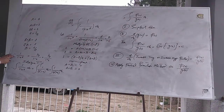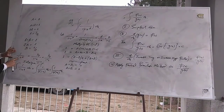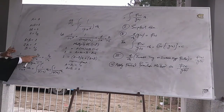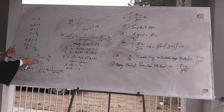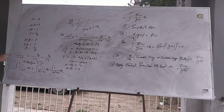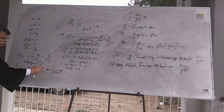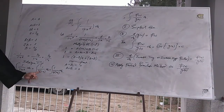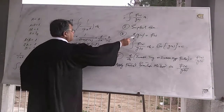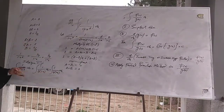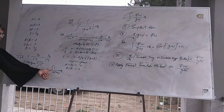So 1 divided by 1 minus x squared equals one-half divided by 1 minus x plus one-half divided by 1 plus x. That is, this function is actually the sum of these two simpler functions. We convert this function into its original components, and the integration of 1 divided by 1 minus x squared equals the integration of these two functions. Applying the second formula to each of these two terms, we can integrate the result.